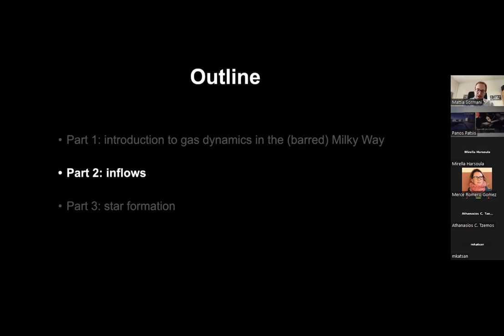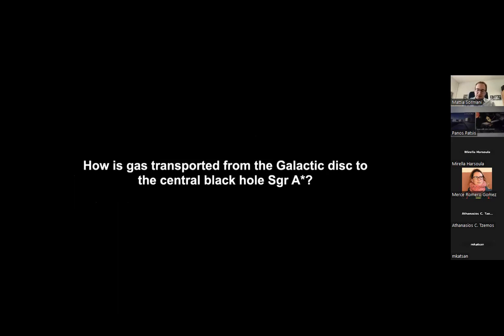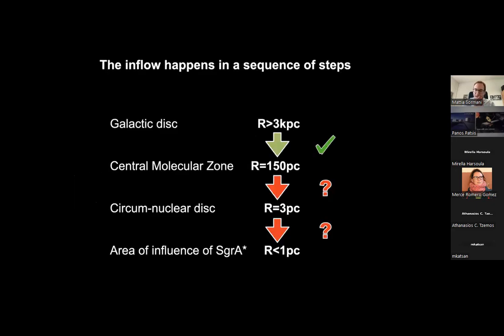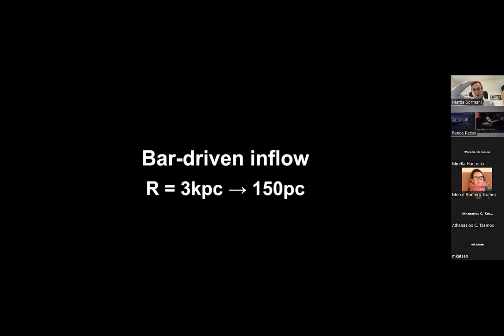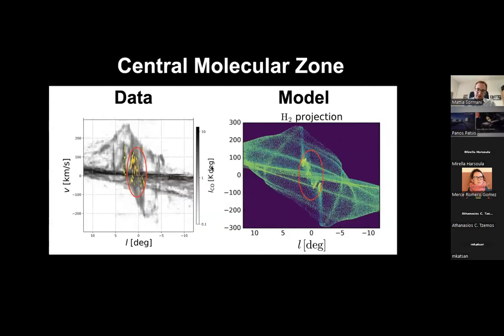How is gas transported from the galactic disc on kiloparsec scales to the central black hole Sagittarius A*? Schematically this is a sequence of steps: first, from the galactic disc to the CMZ, performed by the galactic bar — this is relatively well understood. Then from the CMZ to the circumnuclear disc, which is a disc at three to four parsecs from the center. Then from the circumnuclear disc to inside the area of influence of Sagittarius A*, within the innermost parsec.